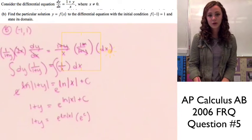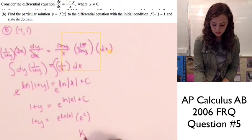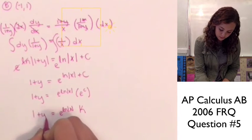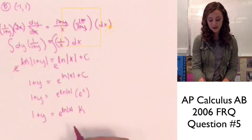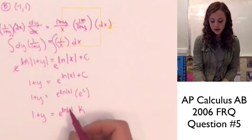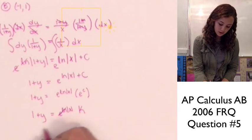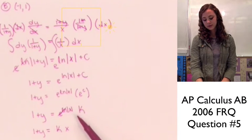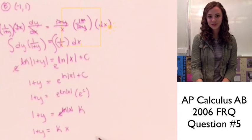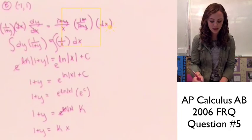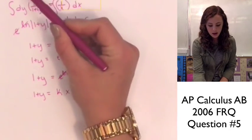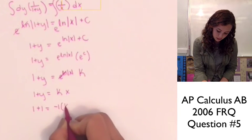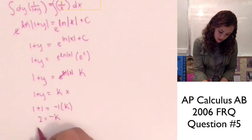Since e^C is a constant, we replace it with k. So e^(ln|x|) times k equals 1 + y. We know that e^(ln of something) cancels, leaving us with 1 + y = kx. We can remove the absolute value since we're finding the particular solution. Plugging in our coordinates (-1, 1): 1 + 1 = k(-1), so 2 = -k, giving us k = -2.